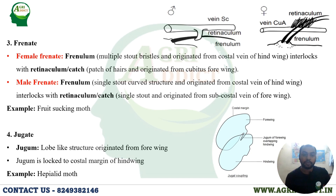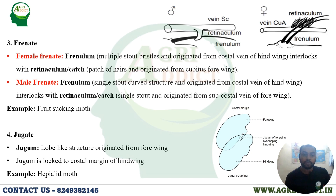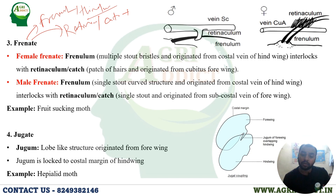The third type is frenate coupling. The linking structure is called frenulum, which originates from the hindwing. Another structure called retinaculum, also known as the catch, originates from the forewing. Frenate coupling occurs when the frenulum from the hindwing and the retinaculum from the forewing are linked to each other.